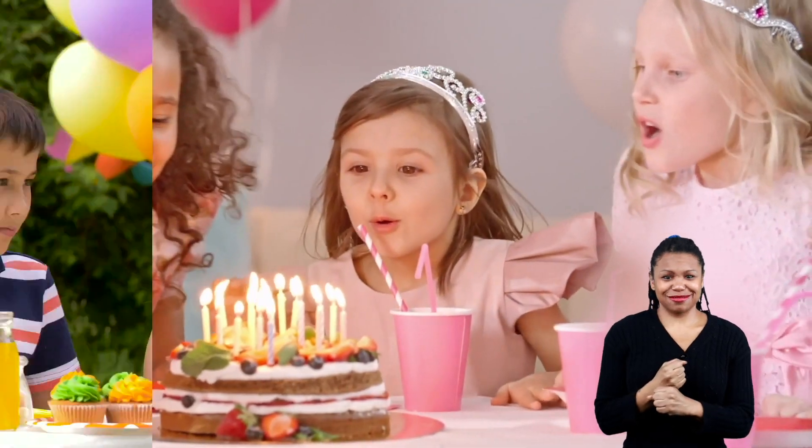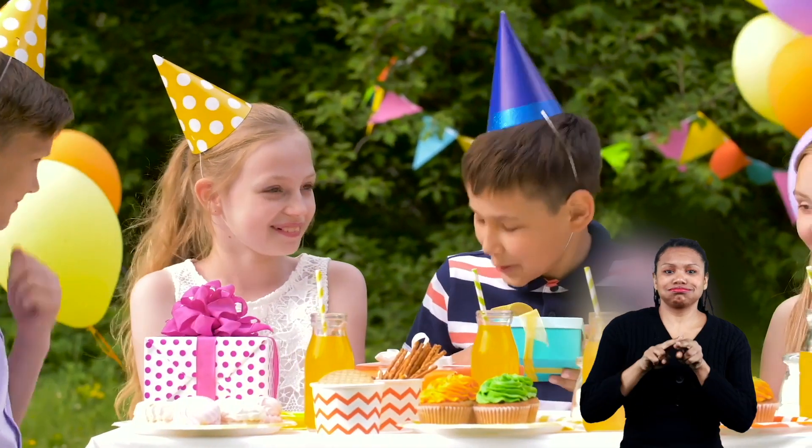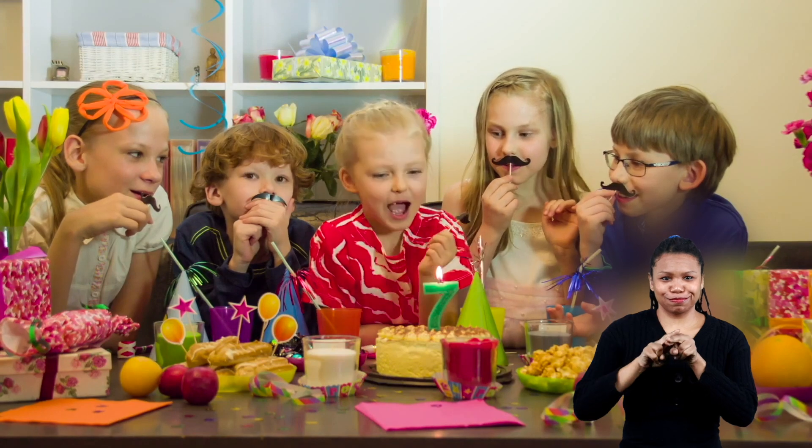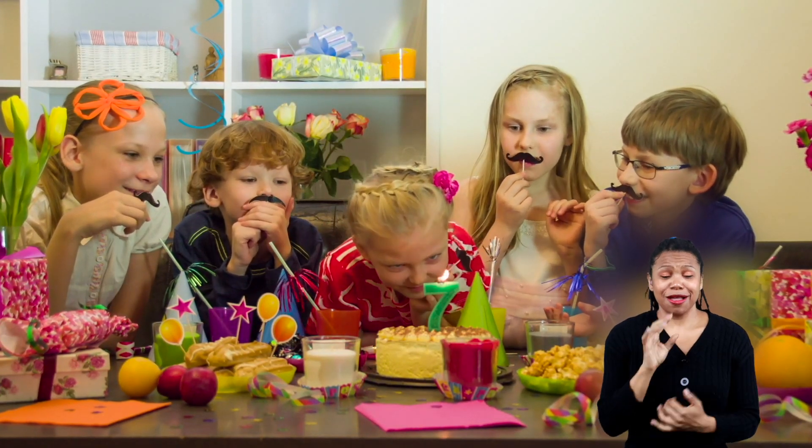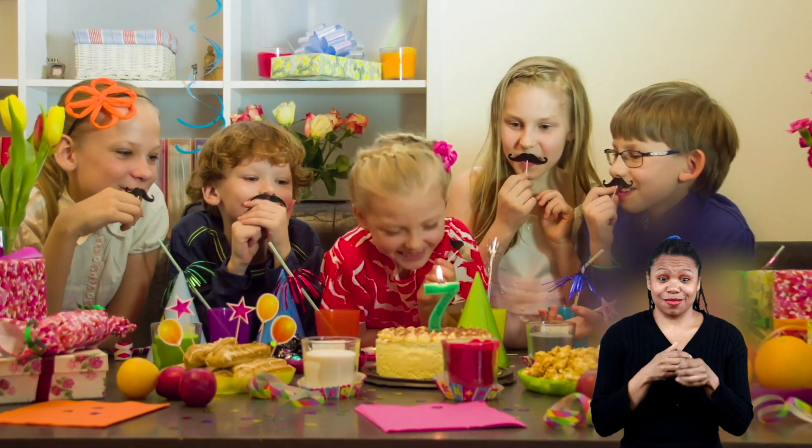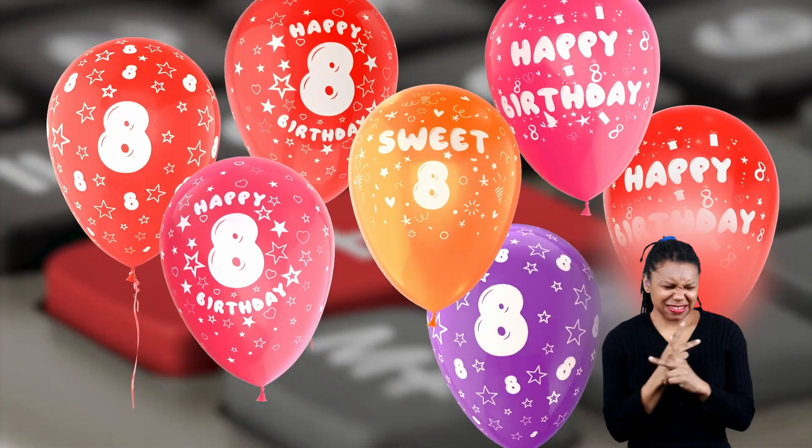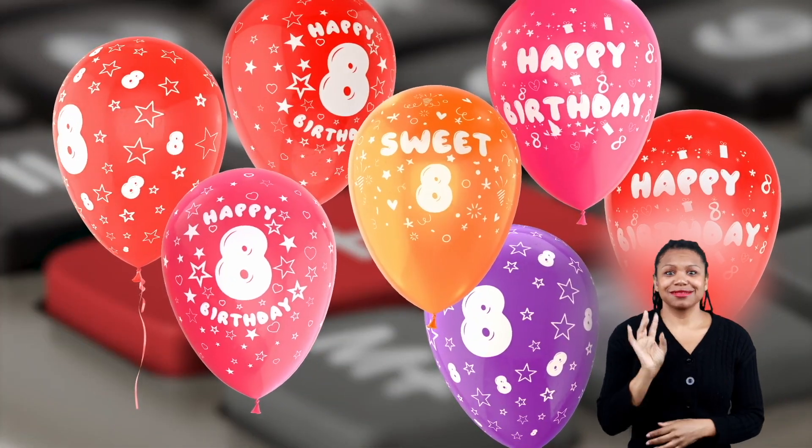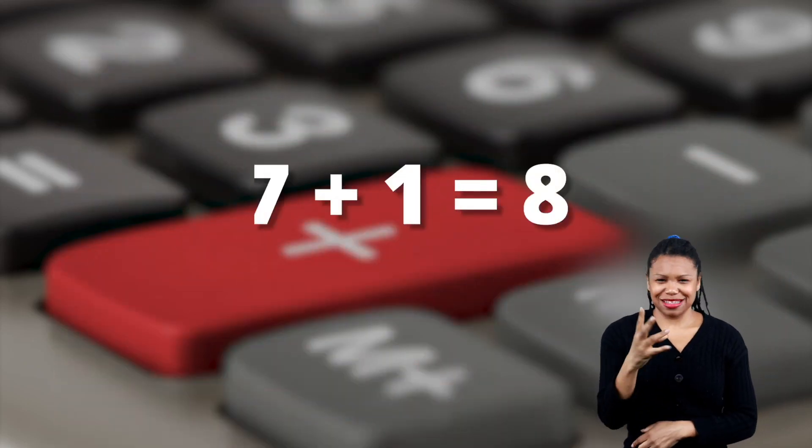Take how old you are, for example. This year, you're a certain age, and next year, you'll be a year older. Each year you live, one will be added to your age. Let's say you're now seven, and when you have your next birthday, you'll be eight. You are able to figure that out by adding one to seven to get eight. So eight was the sum of seven and one.